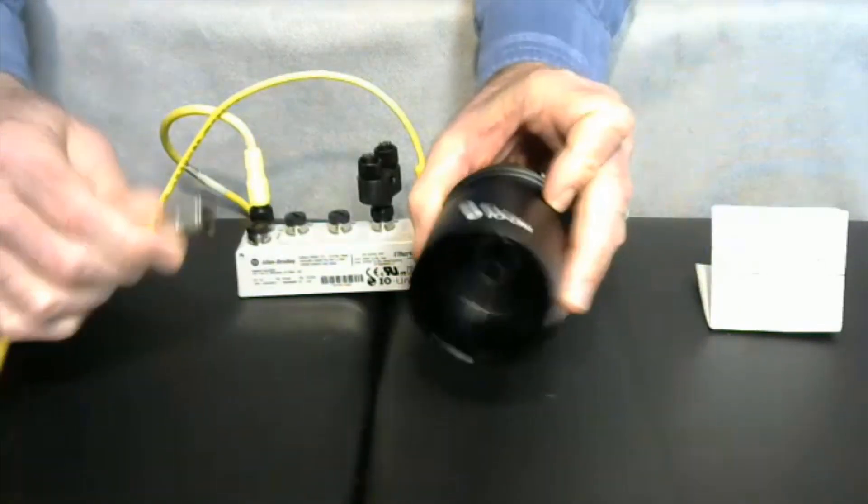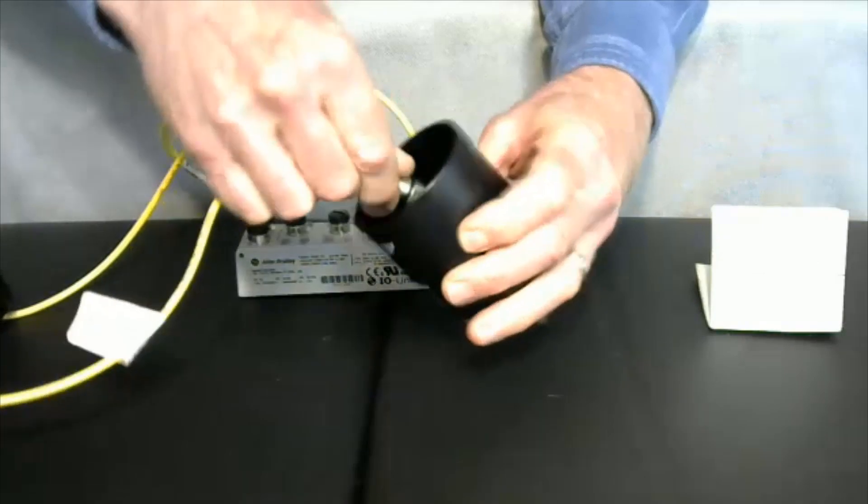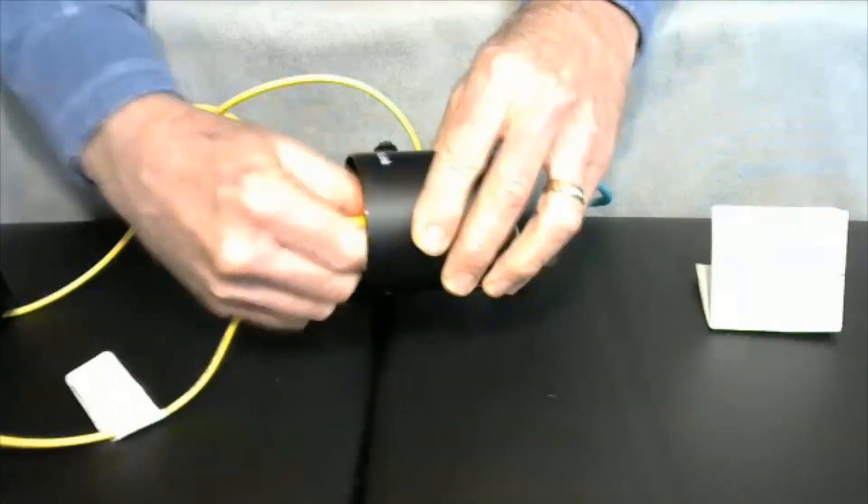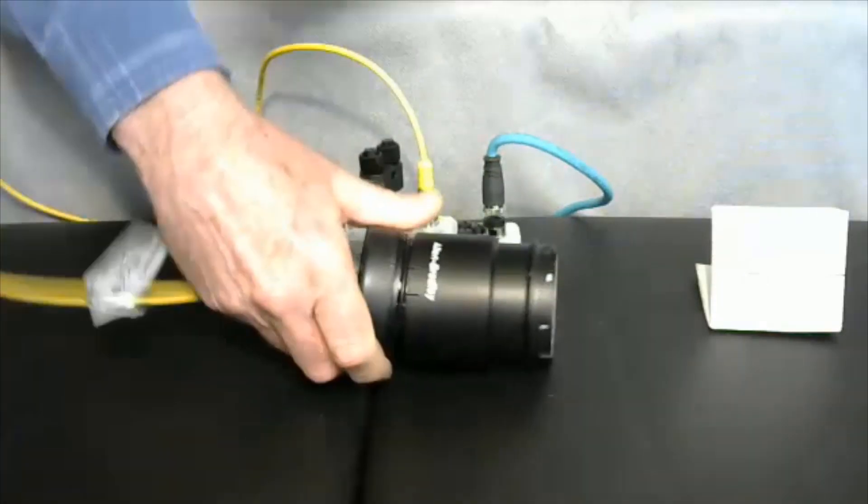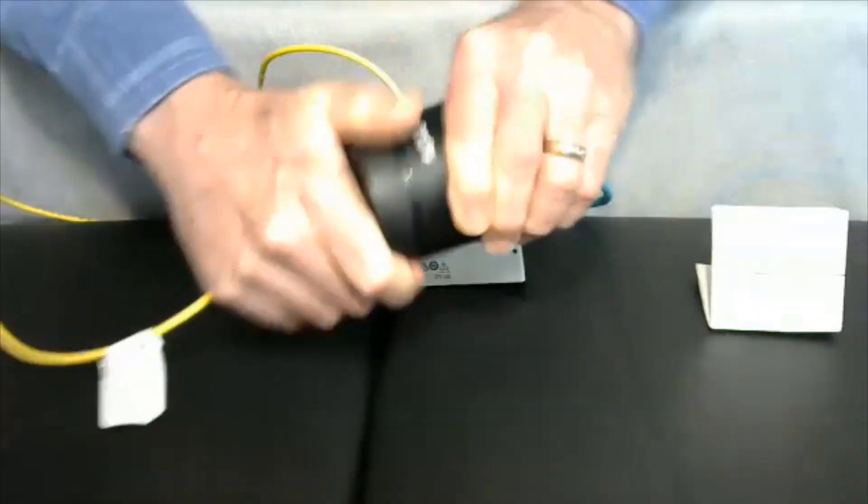The IO-Link patch cord connects to the bottom of the IO-Link module after passing through the mounting base. Once the patch cord is connected, I can secure the module to the mounting base just like a standard 856T power module.